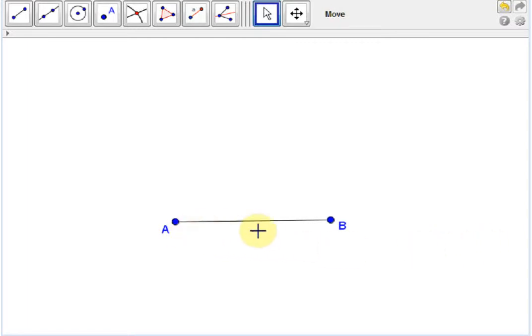That is, given a line segment AB, construct a point D on this segment such that AD is equal to DB.